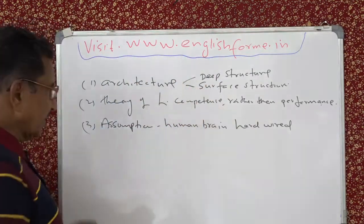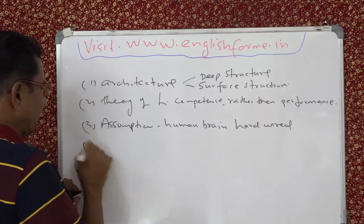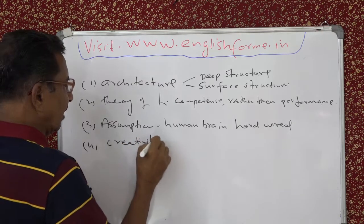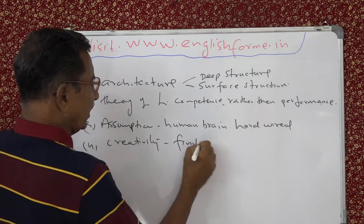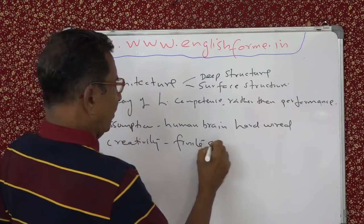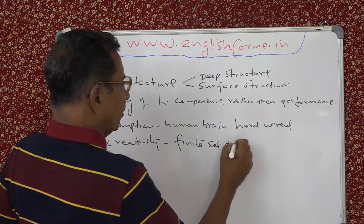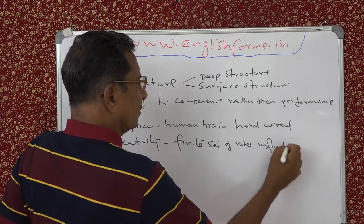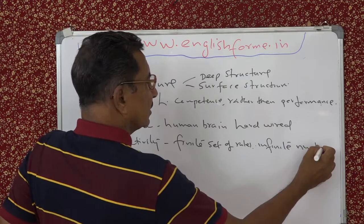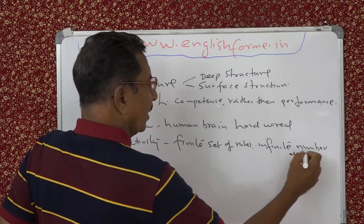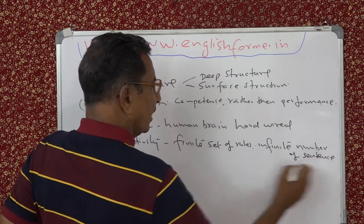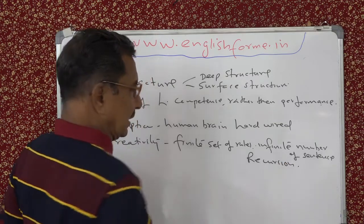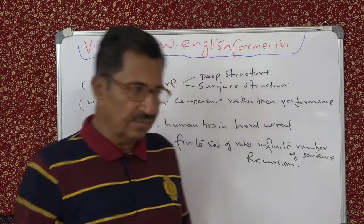The fourth point is creativity — which you have already seen. Creativity means a finite set of rules generates an infinite number of sentences. That is achieved by means of recursion. Recursion is repeating the same structure again and again.